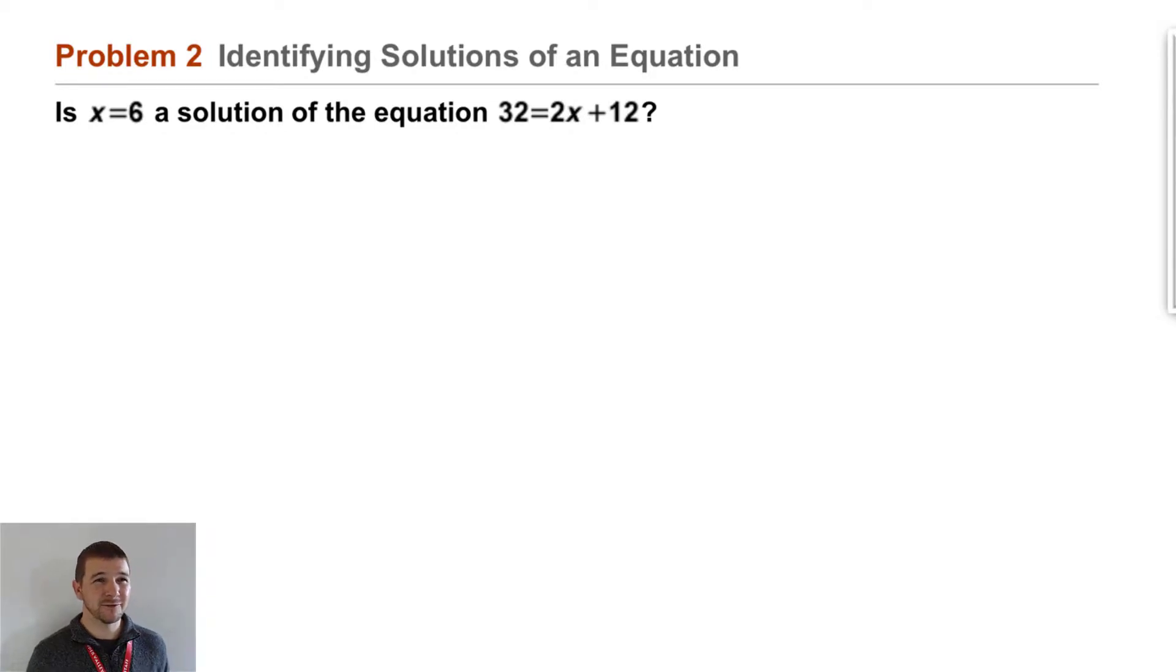Well, we need to substitute and figure it out. Our equation 32 equals 2 times the variable x plus 12. We want to see if 6 is a solution, so we'll substitute 6 for x and rewrite the equation.